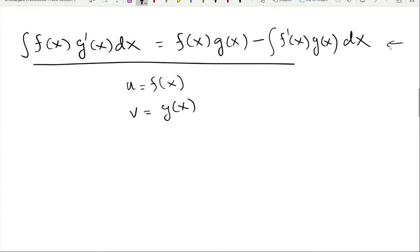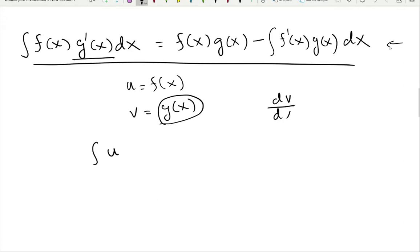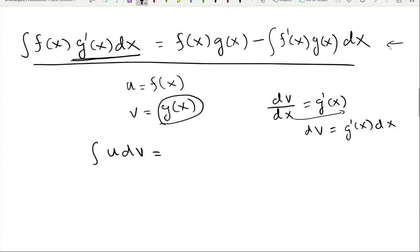Let's rewrite the formula using u and v. Since f is u, that substitutes directly. Now g-prime is the derivative of g with respect to x, so dv/dx equals g-prime. That means g-prime·dx equals dv. So g-prime·x·dx can be replaced by dv, and g is v.